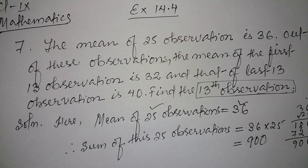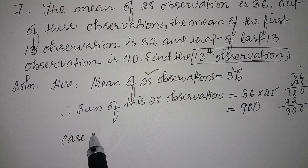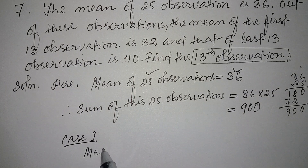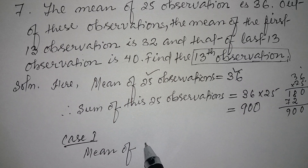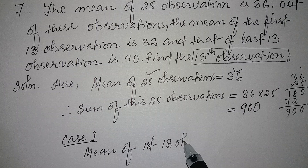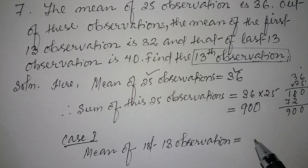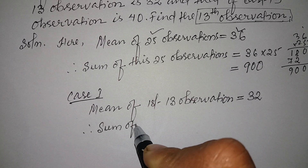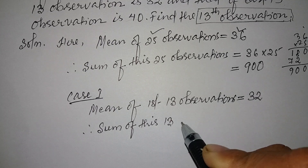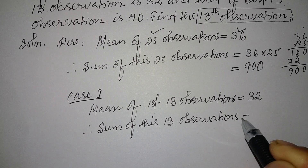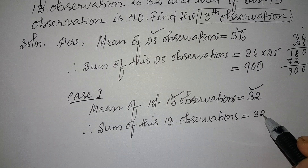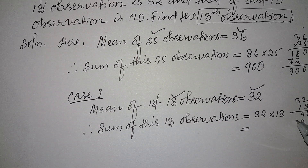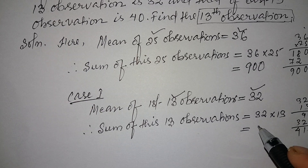In the first case, the mean of the first 13 observations is 32. Therefore, the sum of the first 13 observations is equal to mean into number of observations, which is 32 into 13, giving us 416.